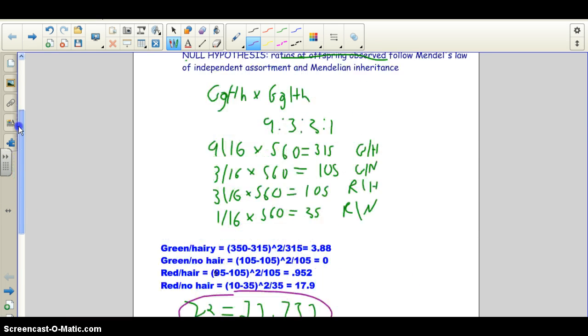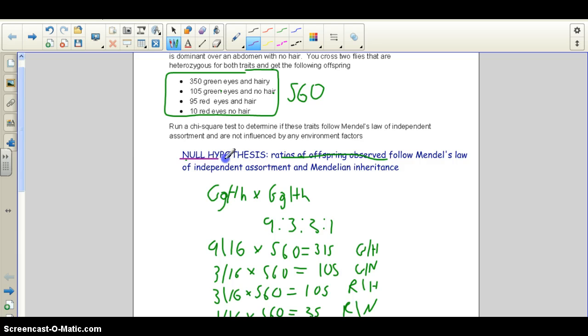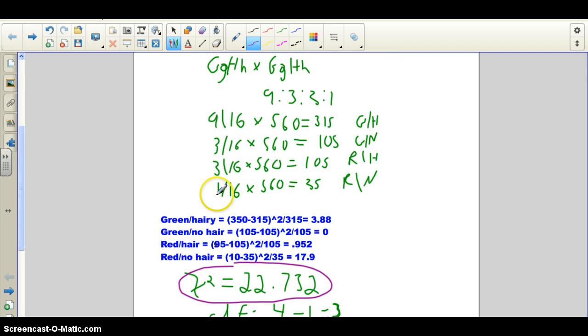So just to review the steps, so that you have, step one is to write your null hypothesis. So you can always start ratios of offspring observed, follow, and then fill in your form of inheritance. Then you do a Punnett square or predict the expected ratios, if you're following this law, this method, or you think it's this form of inheritance. Multiply the probabilities by the total number of offspring for each case. Using that, calculate your chi-square by taking the observed value, subtracting the expected value, squaring it, and dividing by the expected value, and doing that for all offspring or all classes of offspring.